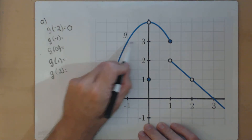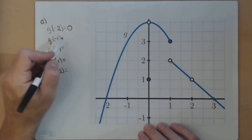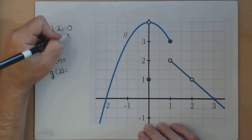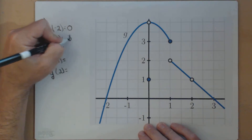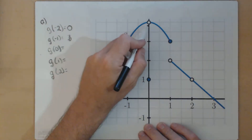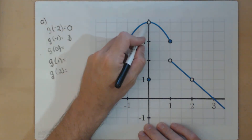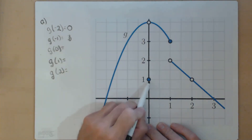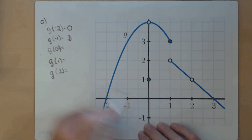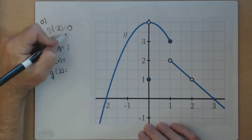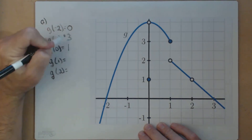g of negative 1 equals 3. g of 0 is not 4 — notice the open circle. g of 0 is actually 1, where we have the filled-in circle. So that function value is going to be 1.